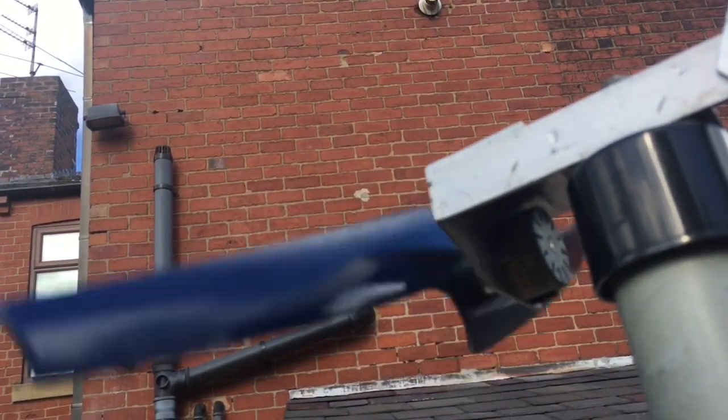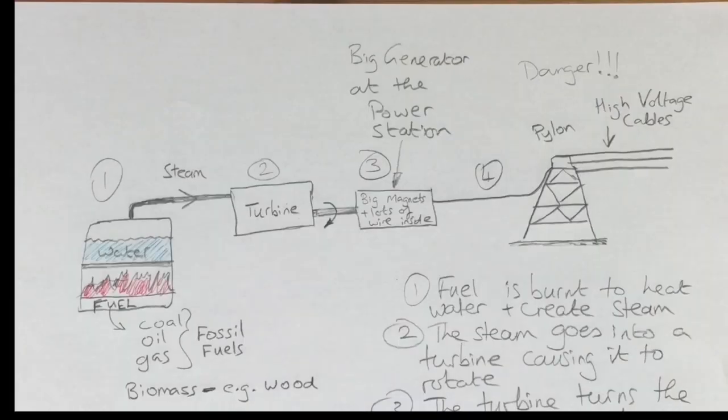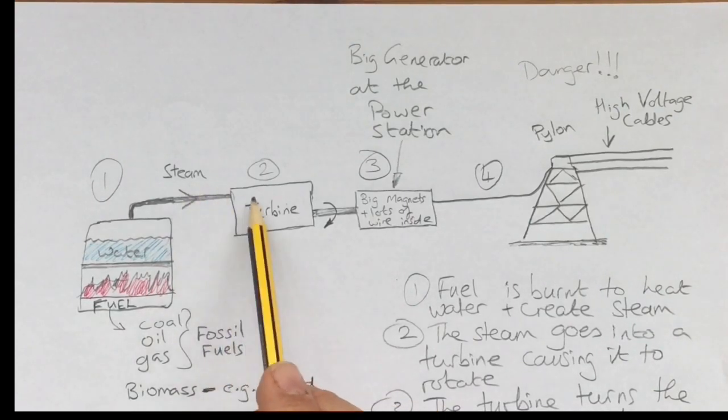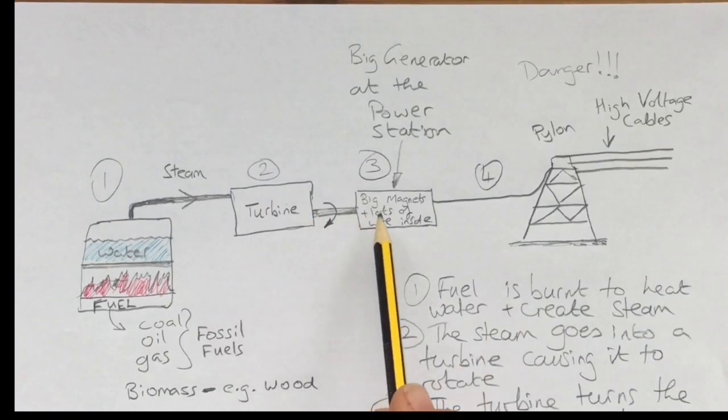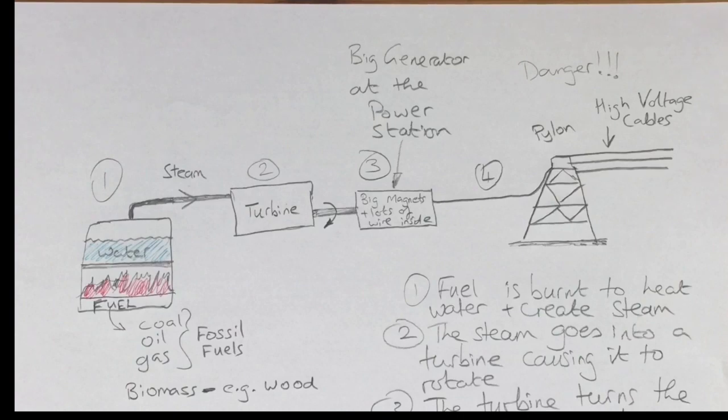When we studied the power station that uses fuels to burn like coal, oil, gas, biomass, hopefully you remember that the steam comes along, blows the turbine round, that then turns the generator around, that generates electricity. It's just the same principle on a wind turbine.